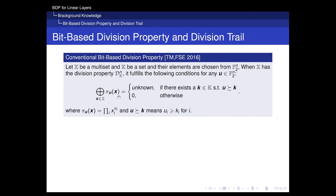If the cipher acts on the plaintexts and the intermediate states, we can trace the propagation of the division property from the multi-set of the plaintexts to the intermediate states and to the multi-set of the ciphertexts. Finally, we can get the zero-sum property of the ciphertexts, and an integral distinguisher can be obtained.